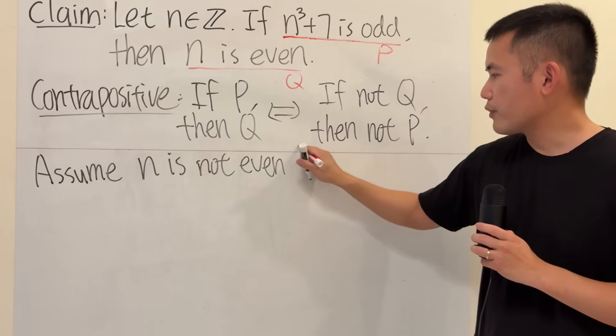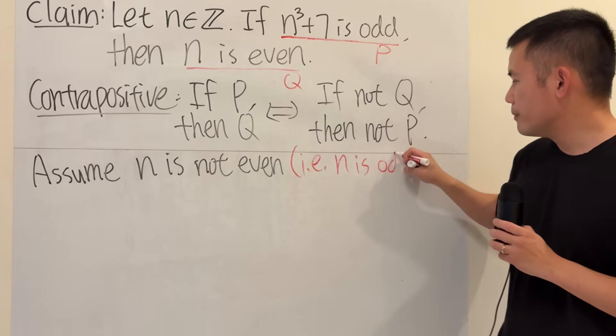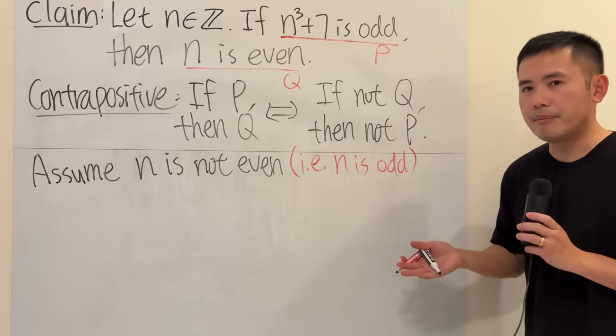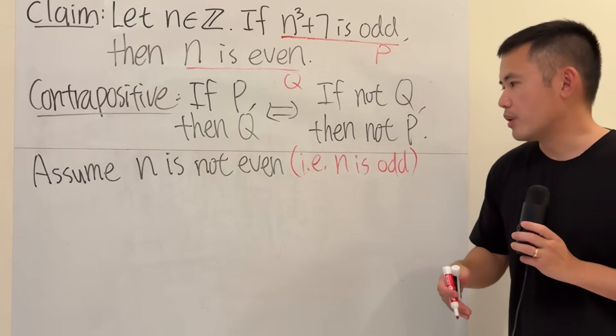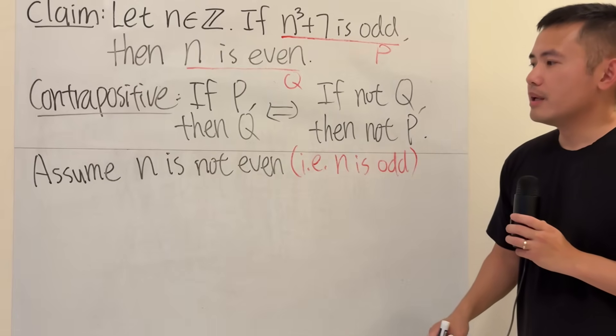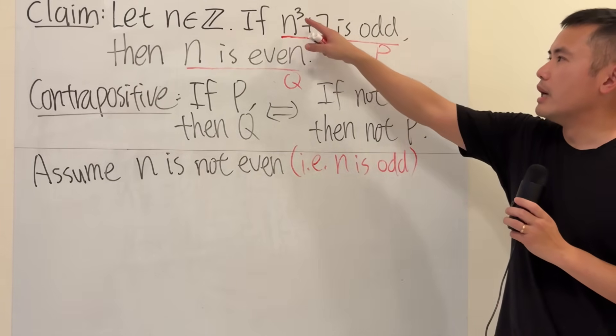And of course, that means n is odd. Because when you have a number, an integer, it's either an even integer or an odd integer. And now, once we have this assumption, our goal is to show that we don't have this.